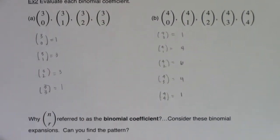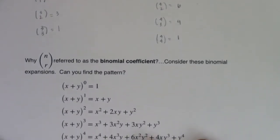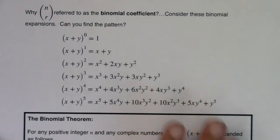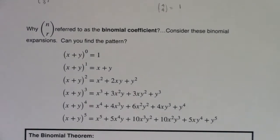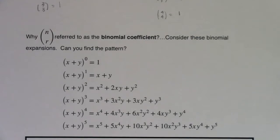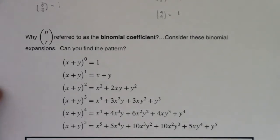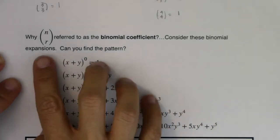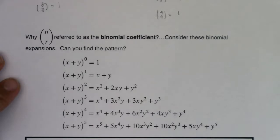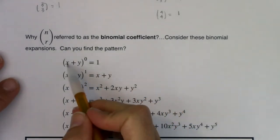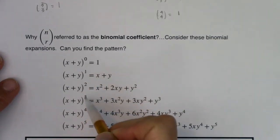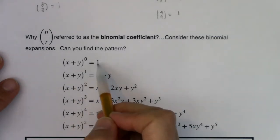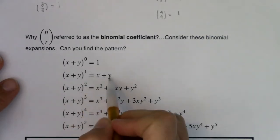So let's take a moment and see if we can connect out why n choose r is called the binomial coefficient. So why is n choose r referred to as the binomial coefficient? Think of these binomial expansions. When I say binomial, I want you to see that I have two terms, and what's going to change is the exponents on each of these. Anything raised to the 0 is 1, and anything raised to the 1 is itself.